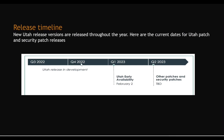You can see Q3 2022 and Q4 2022 — we already got this Utah release in our development instance. You can upgrade your development instance from San Diego to Utah, or San Diego to Tokyo — anything is fine. Utah early availability was in February, so that was last month. In Q2 2023 we will get other patches and security patches. The exact dates will be announced soon.